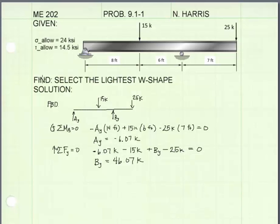The first thing that I've done is draw a free body diagram to solve for my support reactions. I'm going to begin by summing the moments about point B. And when I do that, I get a value for Ay equal to negative 6.07 kips. That means the reaction force at Ay is actually pointing down. And then summing the forces in the y direction, I can solve for the reaction force By, and that is 46.07 kips.